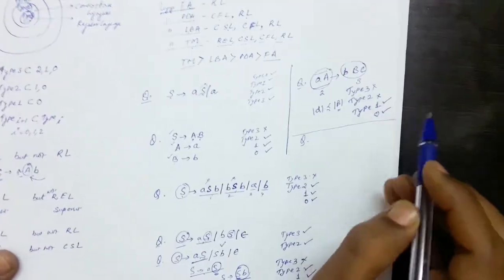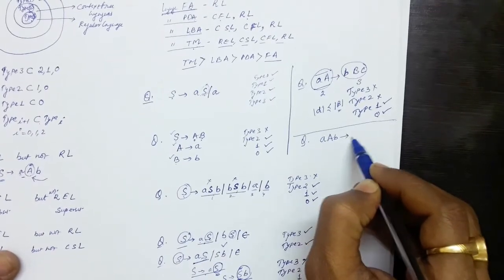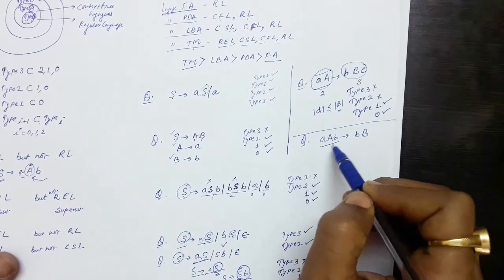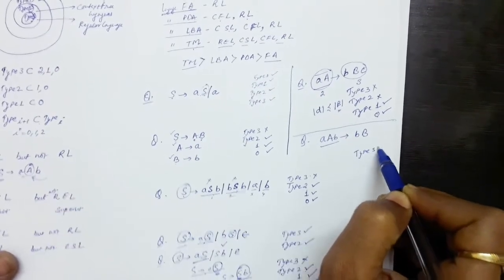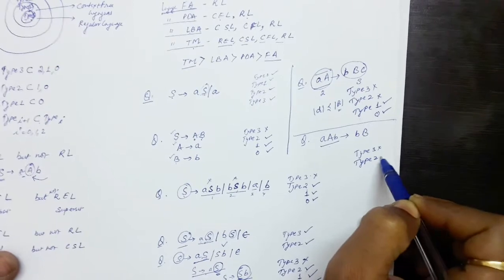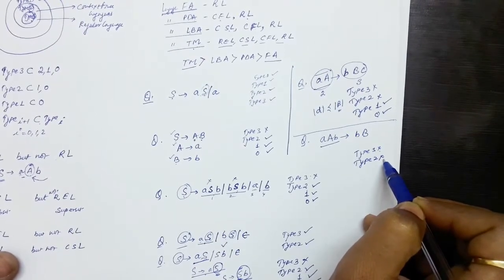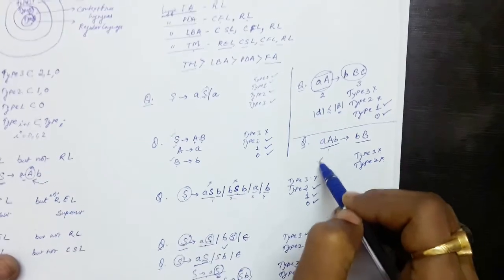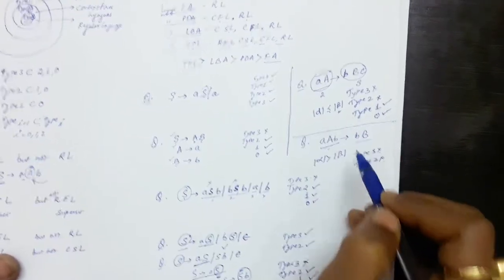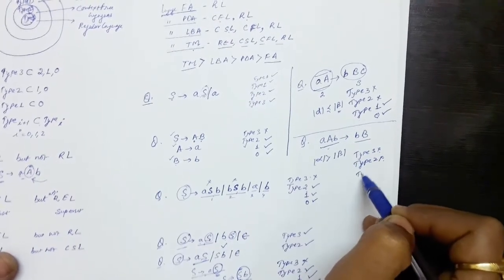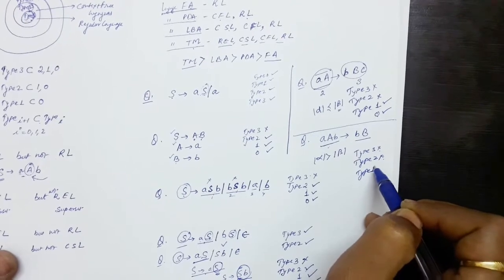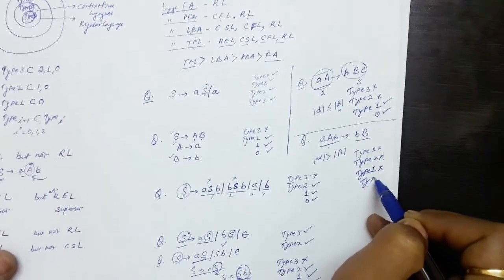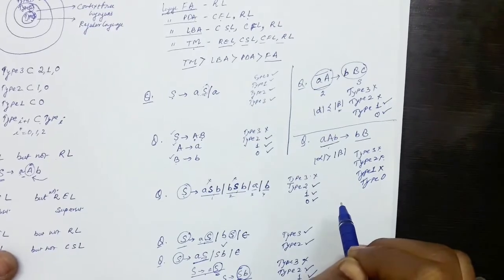Let us take another example: AAB produces bB. In this grammar we have more than one symbol on the left hand side, meaning Type 3 and Type 2 are denied. The number of symbols on the left hand side is 3, which is greater than the number of symbols on the right hand side, which is 2. So this cannot be Type 1, because Type 1 requires the number of symbols on the left hand side to be less than or equal to those on the right. So this is an unrestricted grammar — Type 0 only. Thank you.